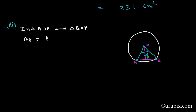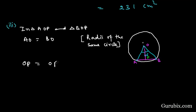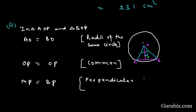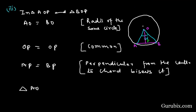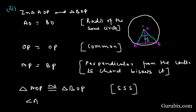Now we move to triangles AOP and BOP. AO equals BO as radii of the same circle. OP equals OP which is common. AP equals BP, as the perpendicular from the center to the chord bisects it. Therefore, triangle AOP is congruent to triangle BOP by the SSS congruency rule. Therefore, angle AOP equals angle BOP, and so these two angles are each equal to 30 degrees, by CPCT — corresponding parts of congruent triangles.